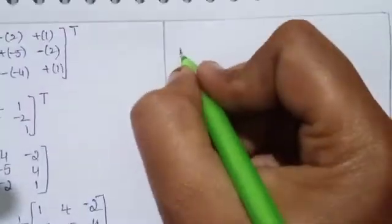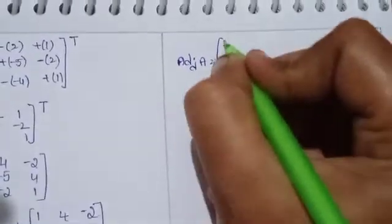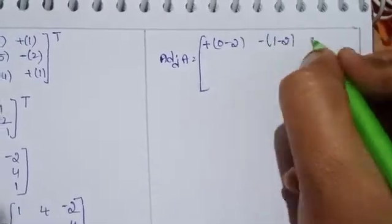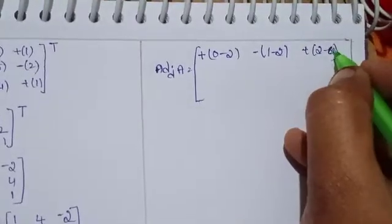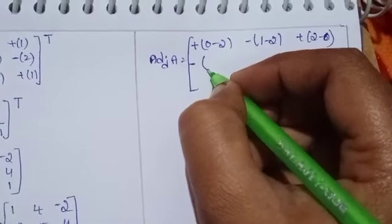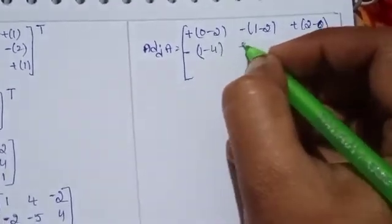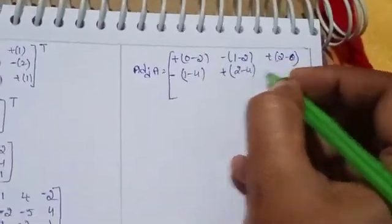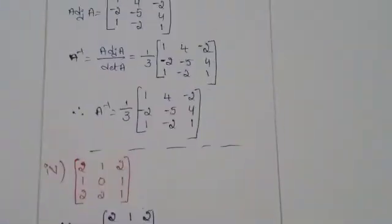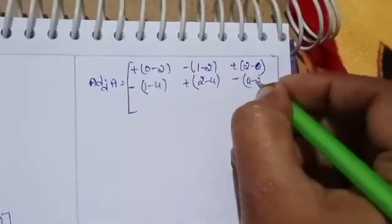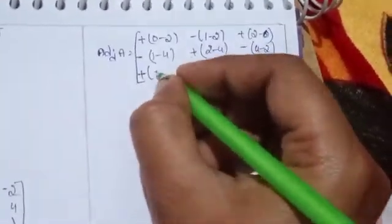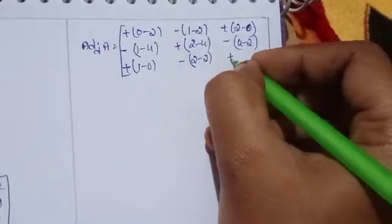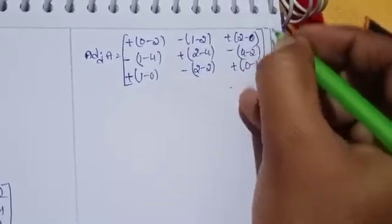Now find adjoint A. Computing the cofactor matrix: plus(0 minus 2), minus(1 minus 2), plus(2 minus 0), minus(1 minus 4), plus(2 minus 4), minus(4 minus 2), plus(1 minus 0), minus(2 minus 2), plus(0 minus 1), all transposed.